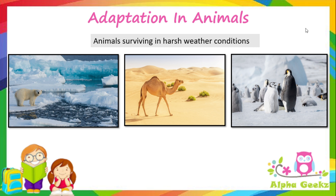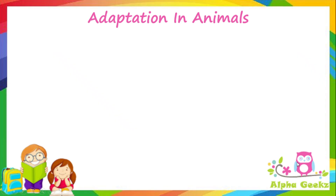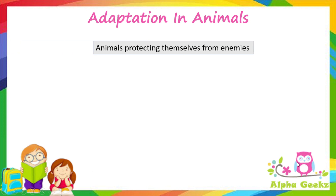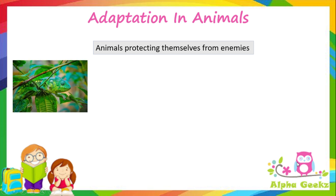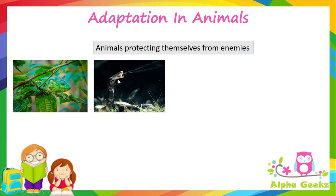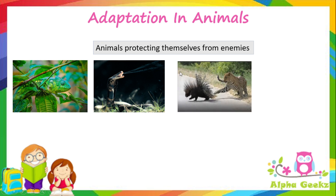Animals also need to protect themselves from enemies. Here we can see that the chameleon has camouflaged itself — it has disguised itself to look like the leaf alongside it — so that it can go undetected by its enemies. Next we have the snake, which spits venom in order to attack the enemy when confronted.